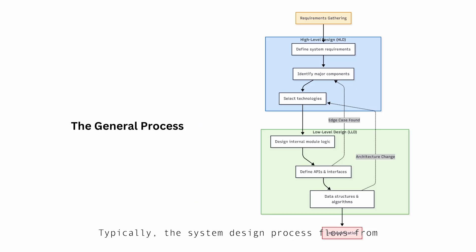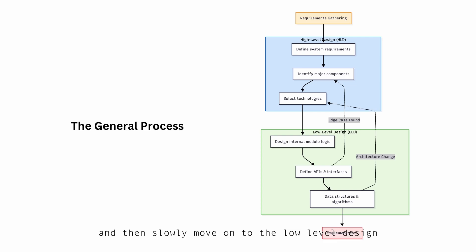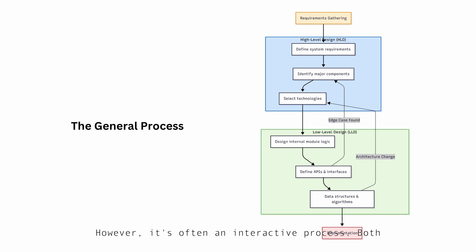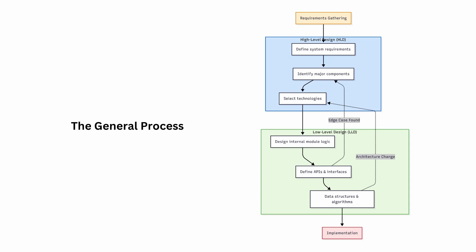Typically, the system design process flows from high level to low level. You start with the big picture and then slowly move on to the low level design for how each service actually works. However, it's often an iterative process. Both are absolutely vital for creating robust, scalable, and maintainable software.